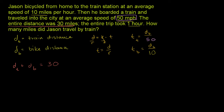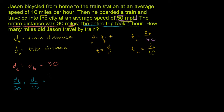So the second statement — that the entire trip took one hour — means the time by train plus the time by bicycle equals one hour. Writing it in terms of distances so we only have two unknowns: dt divided by 50 plus db divided by 10 equals 1. That uses the distance-rate-time relationship with rates of 50 and 10.